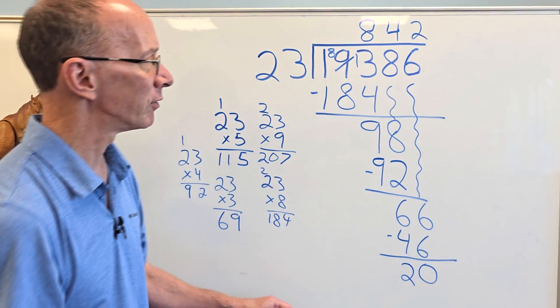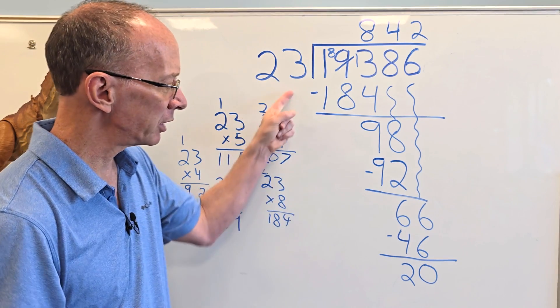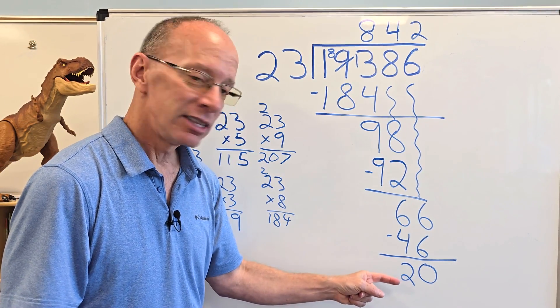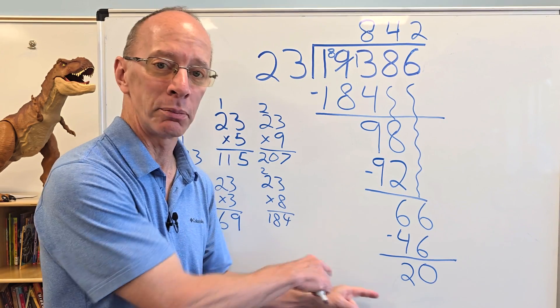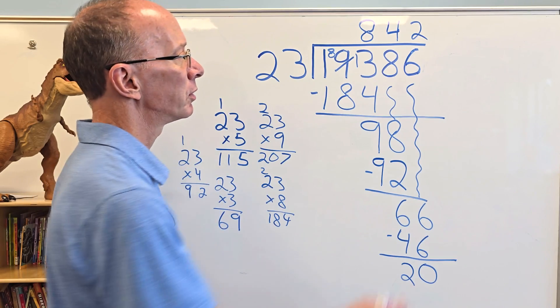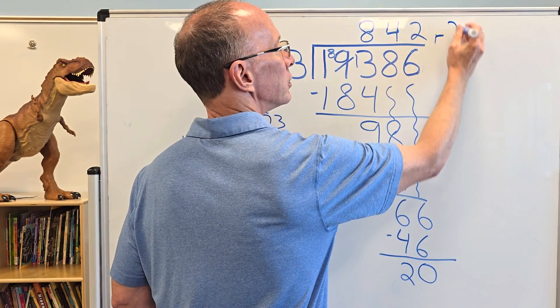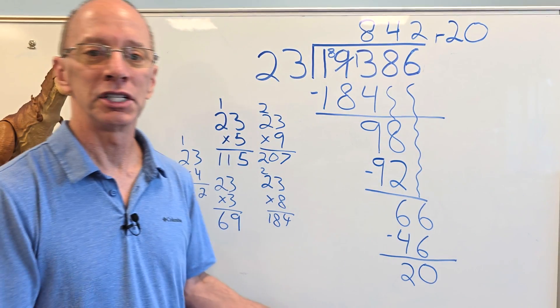Now I have no more numbers to drop down. Can I put 23 into 20? You just can't. Don't worry because this is a double digit number. That's okay. That will be our remainder. So we put R right here. R and then 20, just like that. There's your answer.